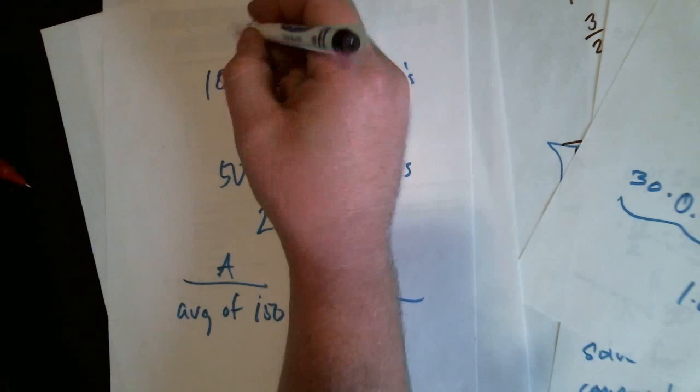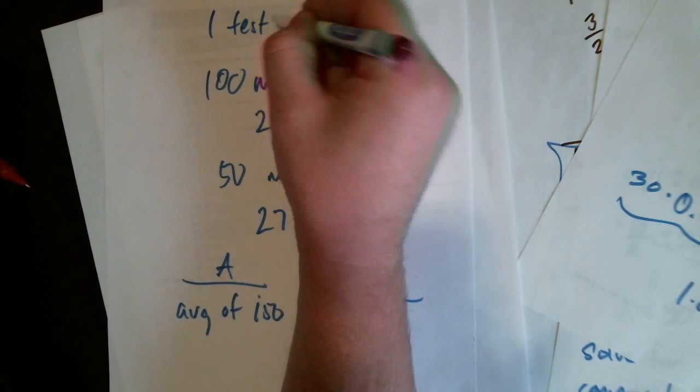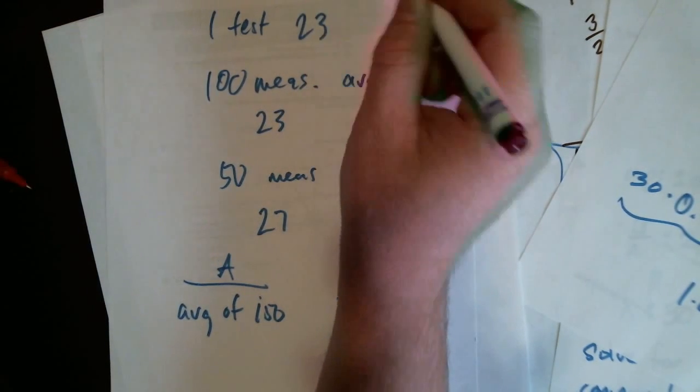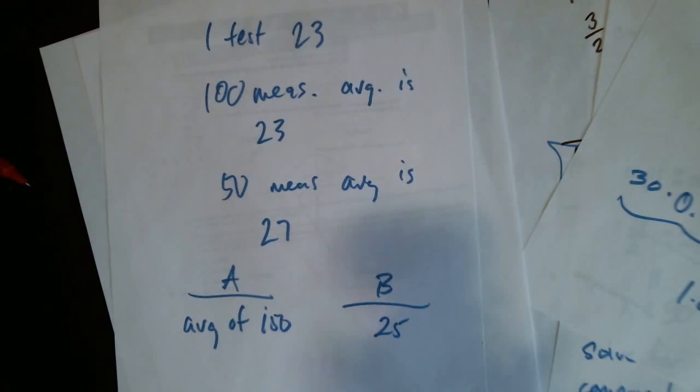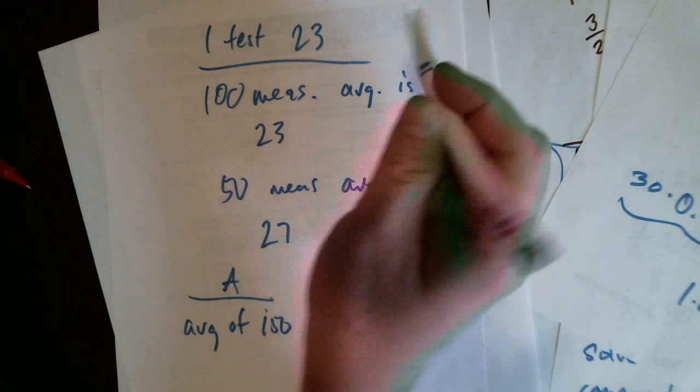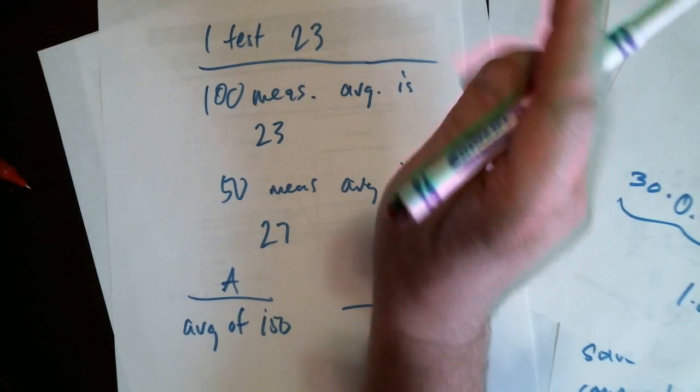But let's say you took one test and you got a twenty-three. And you wanted to bring your average up to a twenty-five. What do you have to get on the next test? Higher than a twenty-three. Right. Specifically what, though?